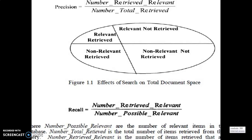Some items can be relevant and required. Some items can be non-relevant but required. Some items are relevant but not required at all. And non-relevant items that are not required — there is no problem at all. Like that, the entire document space can be divided into these four different kinds of spaces.